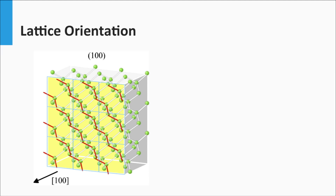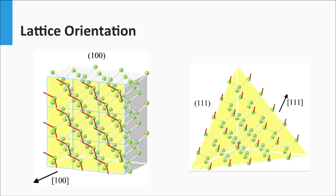We see two important surfaces. The first one is referred to as the 100 surface, and the normal of this plane points in the 100 direction. The silicon at the 100 surface always has two backbonds and two other valence electrons pointing to the front. The second surface is the 111 plane, characterized by three silicon backbonds and one valence electron pointing in the normal to the plane.